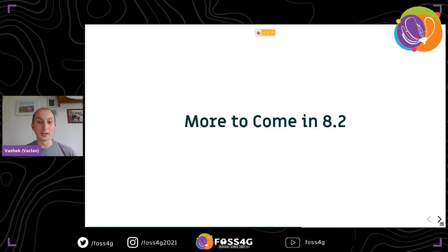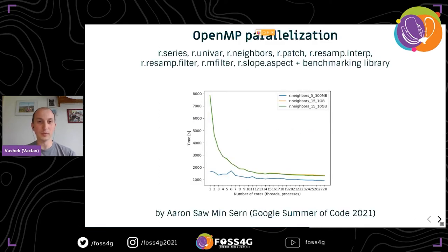There is even more coming in 8.2, which should be around spring next year. We now have several of the raster modules parallelized — specifically parallelized with OpenMP. That work was done by Aaron during Google Summer of Code.